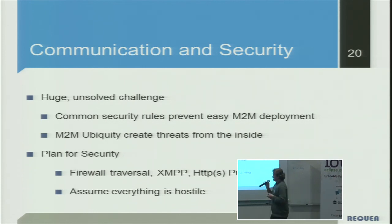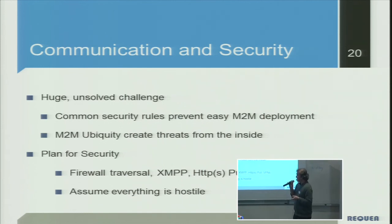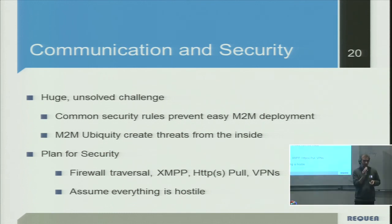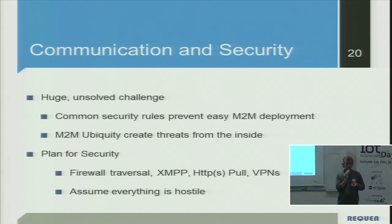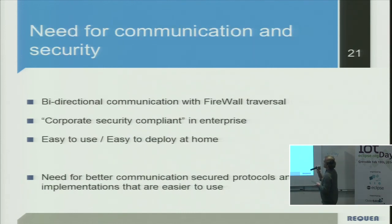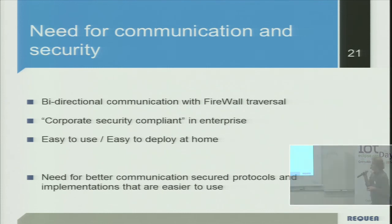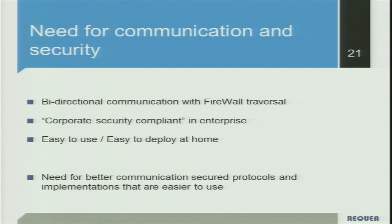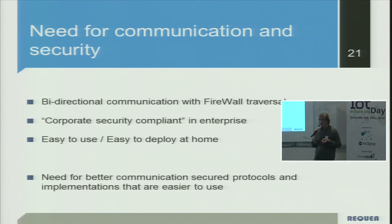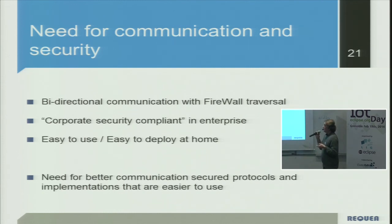In the meantime, we should plan for security. Firewall traversal tools, XMPP, HTTP polling, VPN — these are half-baked solutions that can be used. But most importantly, you have to assume everything is hostile. Those devices can send bad packets. It's not acceptable to have an automation server sending unencrypted traffic to central servers — I disconnected that one. My call is that we need a better communication and security scheme with bidirectional communication and firewall traversal.